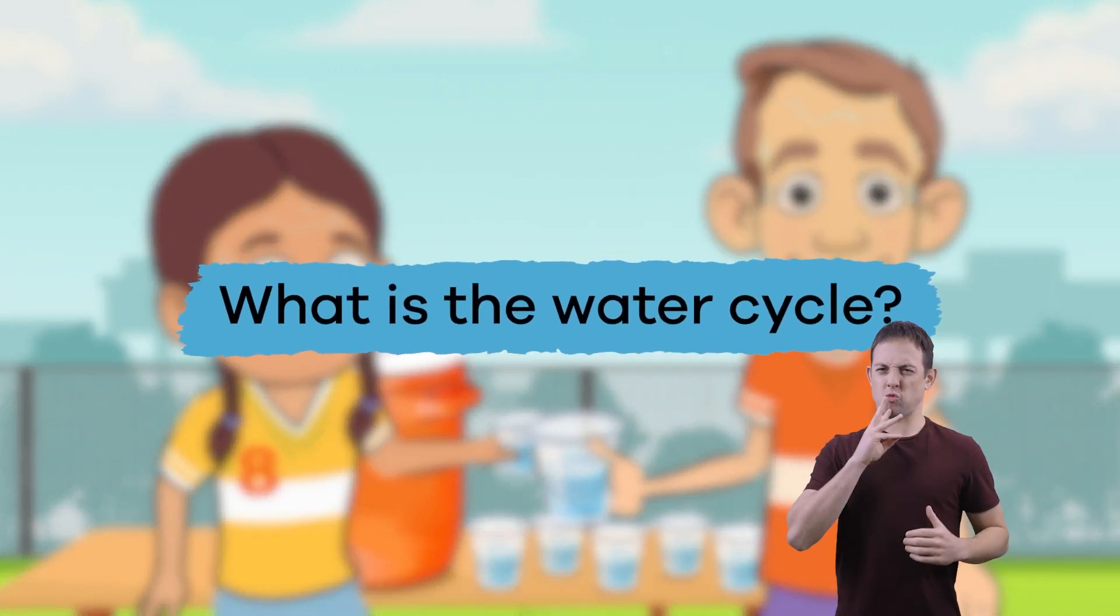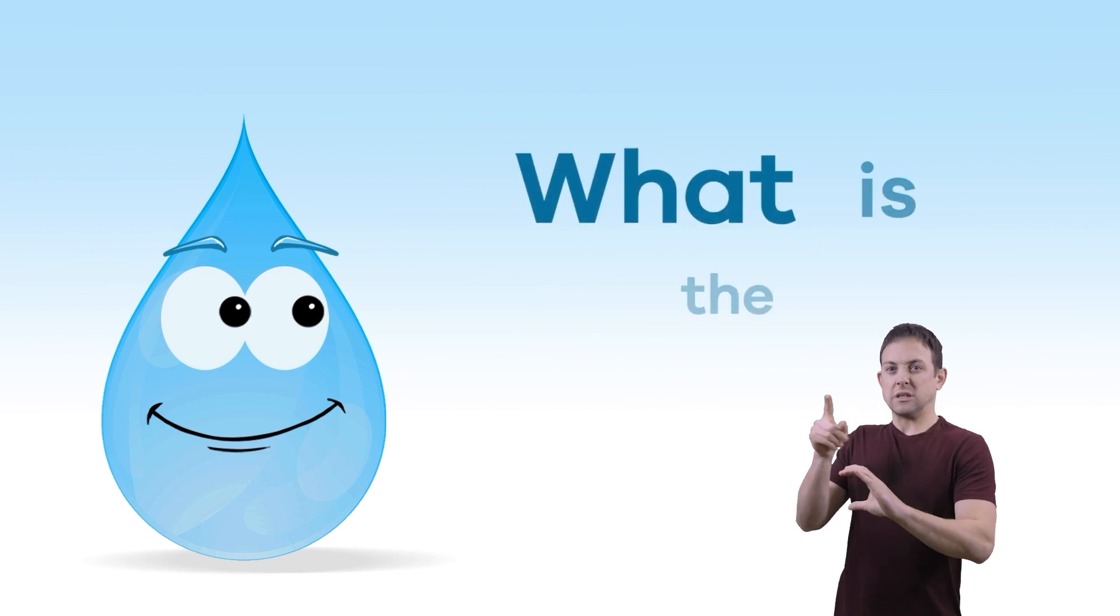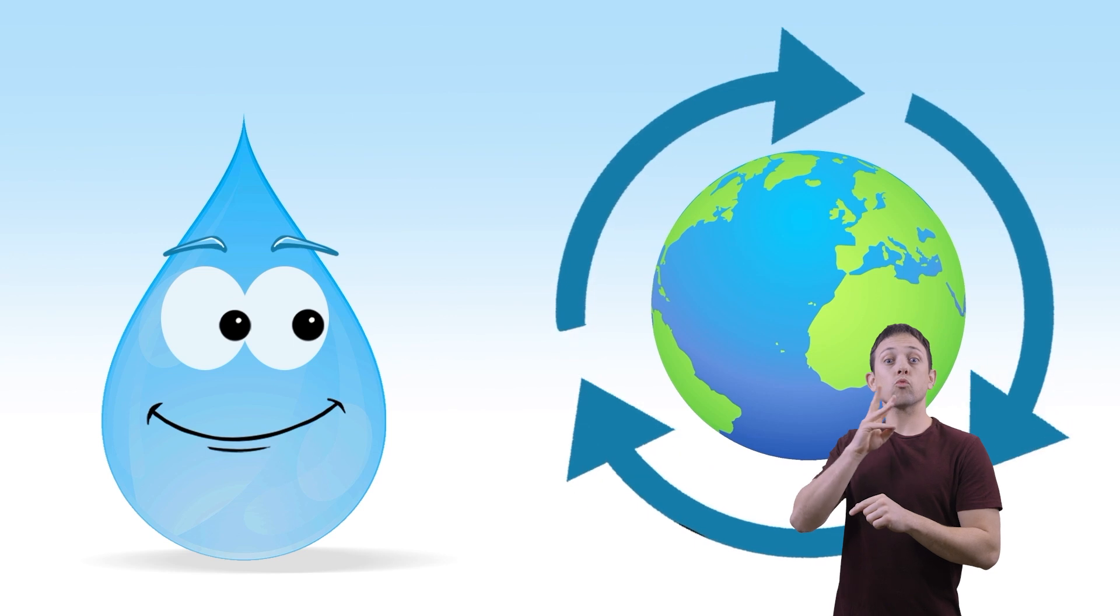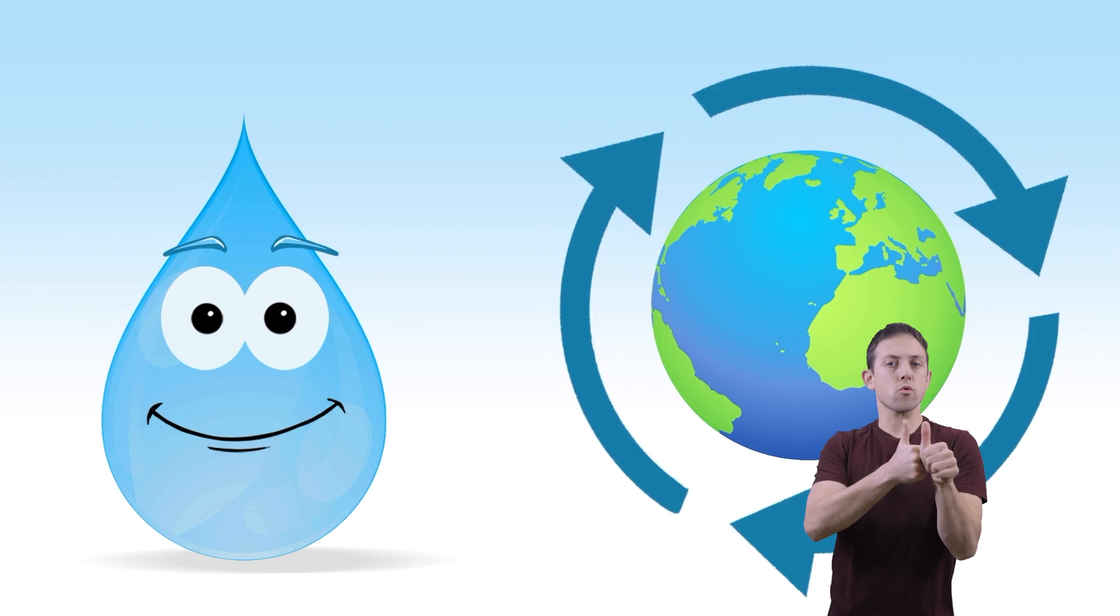What is the water cycle? Before we get into the details about this cool process, we need to know what it means. So, what is the water cycle? It is the path that all water follows as it moves around the Earth in different states or phases.